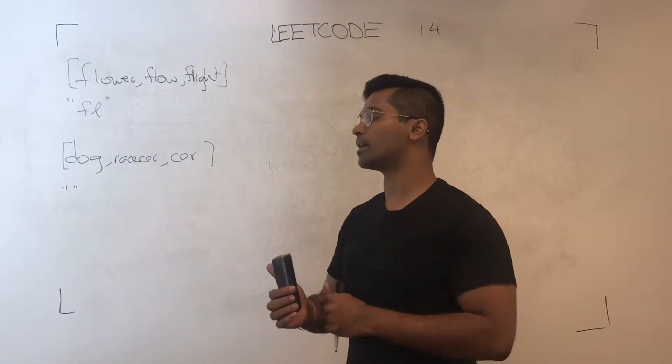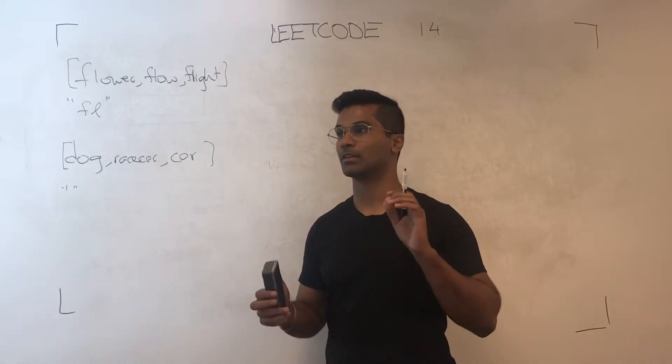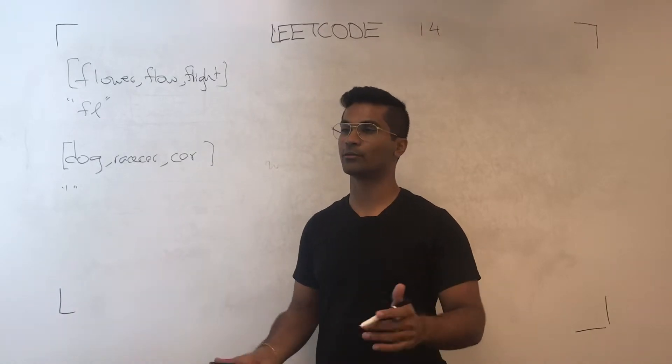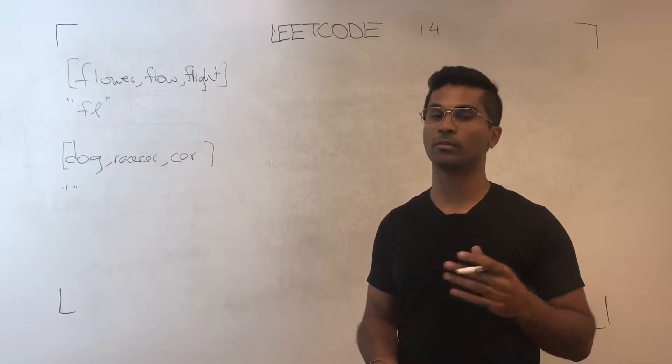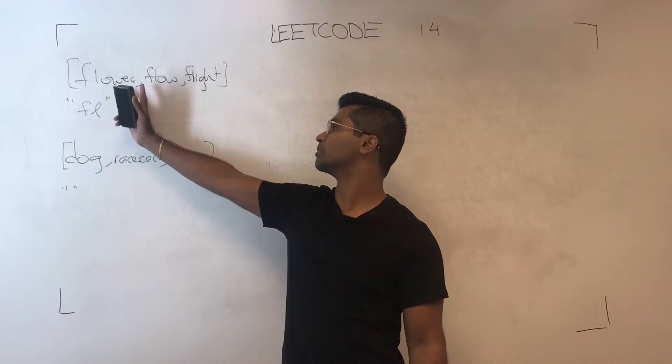So the way we can do this is kind of thinking of finding the lowest common denominator almost. Like if we had 2, 4, and 8, 2 is going to be the common factor. So similarly, we can find the common factors between each word.